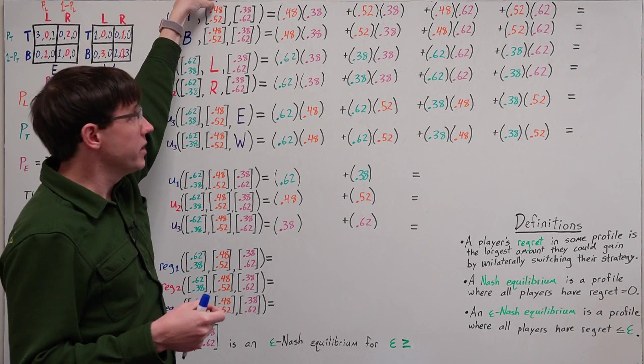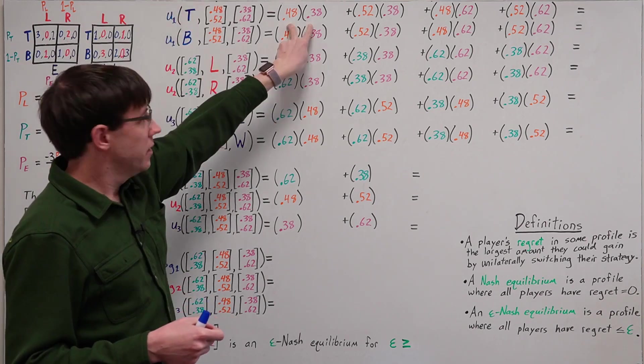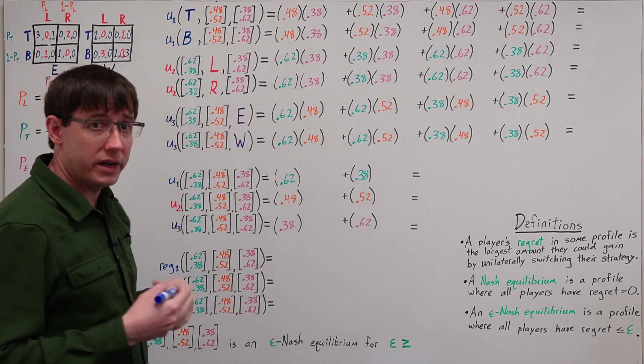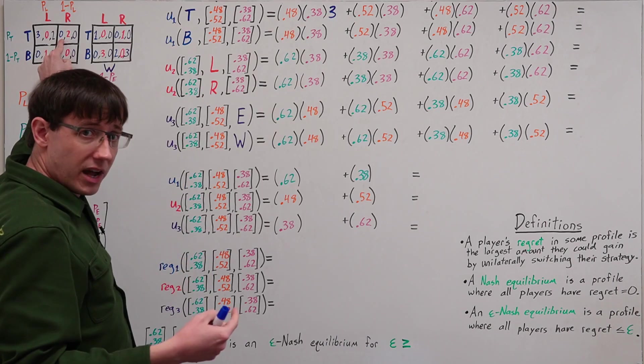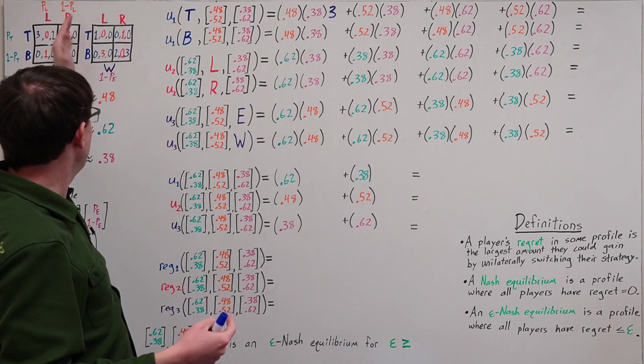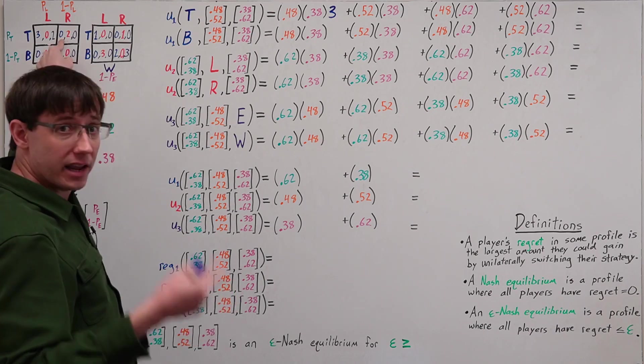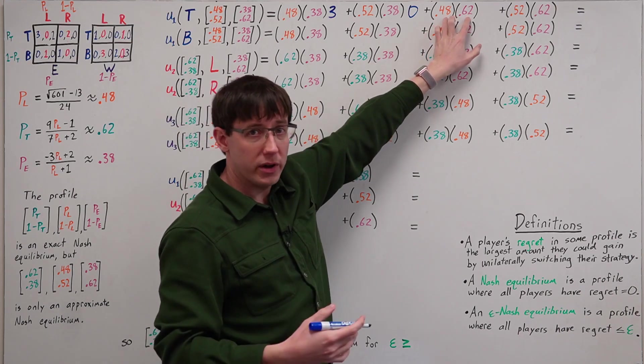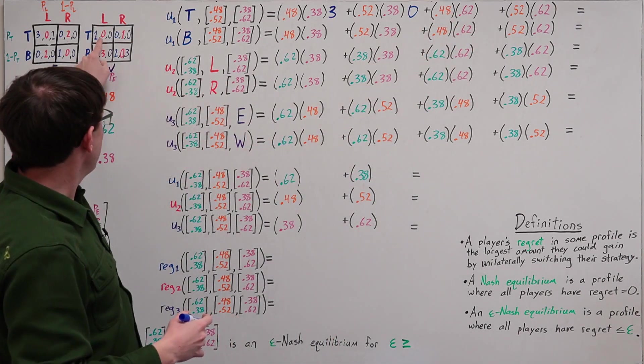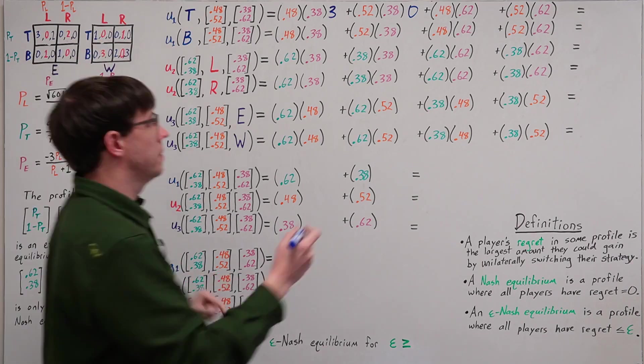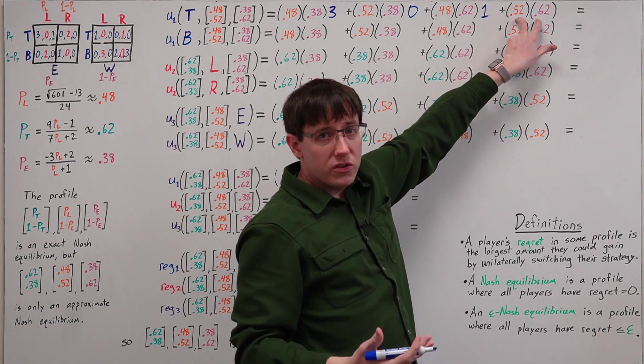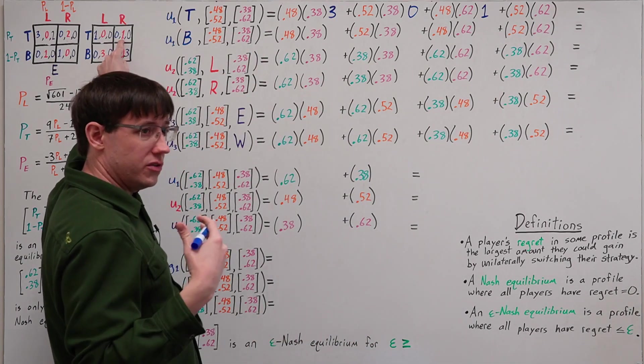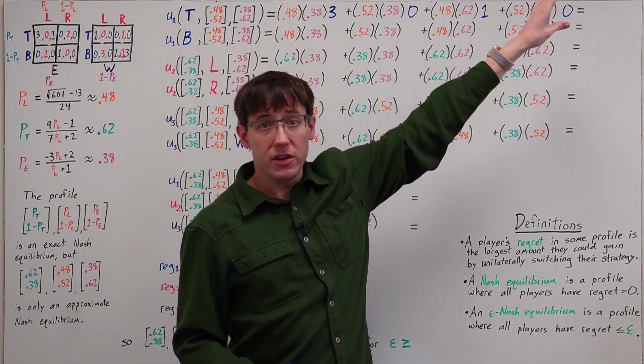Since those probabilities are 0.48 and 0.38, that product tells us the chance we land here, and in that case player one gets a utility of three. The next outcome happens with probability 0.52 times 0.38, and in that case player one's payoff is zero. Then we have a probability 0.48 times 0.62 of ending up in this outcome where player one's payoff is one. And a 0.52 times 0.62 probability of ending up in the last of these outcomes where player one's payoff is zero. And when we sum all this up, this is player one's expected utility.